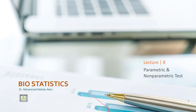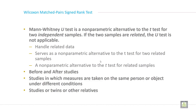Bismillahirrahmanirrahim. I am Dr. Muhammad Mehta Balam and I am discussing about non-parametric tests. This is the third type of non-parametric test called Wilcoxon matched pair sign rank test. We have already discussed about two types of non-parametric tests.